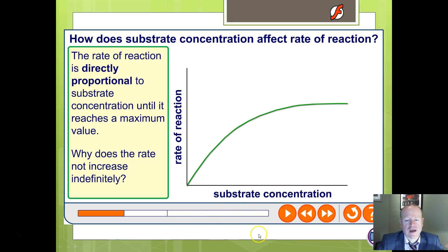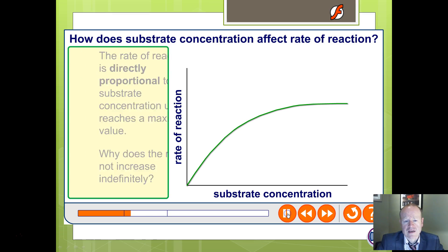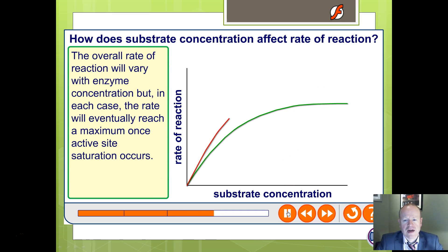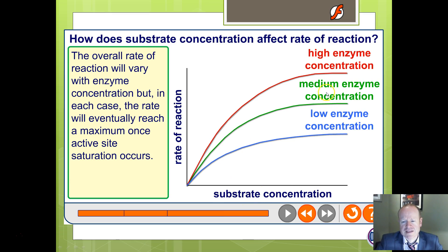Moving on to substrate concentration: initially, the rate increases in a directly proportional manner — as substrate concentration increases, the rate also increases — until it reaches the maximum. It doesn't continue indefinitely, because at some point all the active sites are in use. Even if you increase substrate concentration further, every active site is already occupied, so the rate levels off at its maximum. If you increase or decrease enzyme concentration, you get curves that are correspondingly higher or lower, as there are more or fewer active sites available.